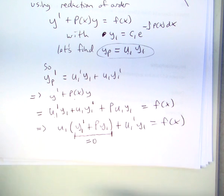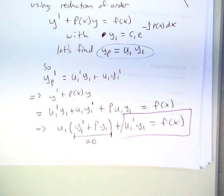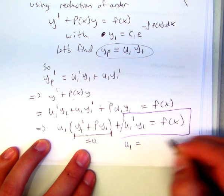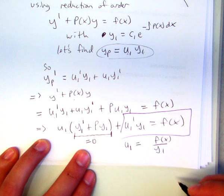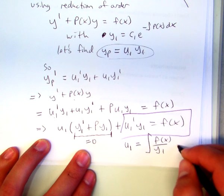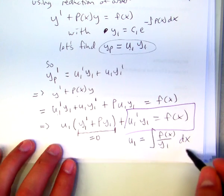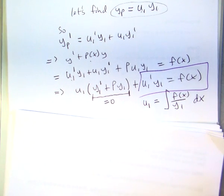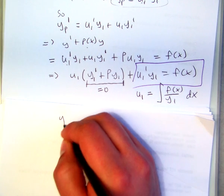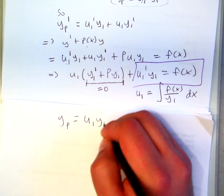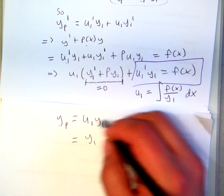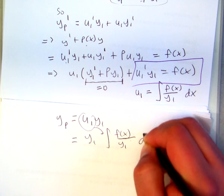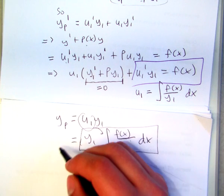then all we have is this. So could we find u1? Just divide by y1, and then take the integral of both sides, and there's your solution for u1. So then the particular solution in this instance, which is u1, y1, is just y1 times, and I'll put this over here, the integral of f of x over y1, which is also in terms of x, possibly, but... Okay?